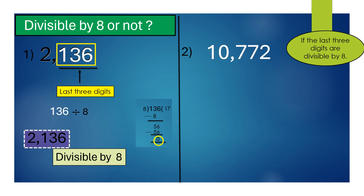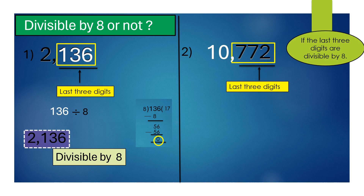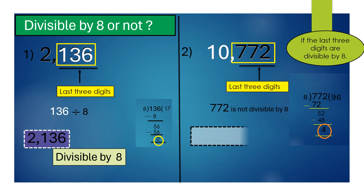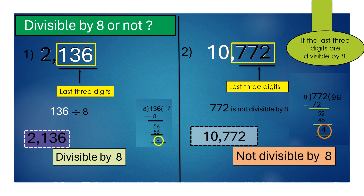For the next number, the last 3 digits are 772. But 772 is not divisible by 8. Therefore, the given number is also not divisible by 8.